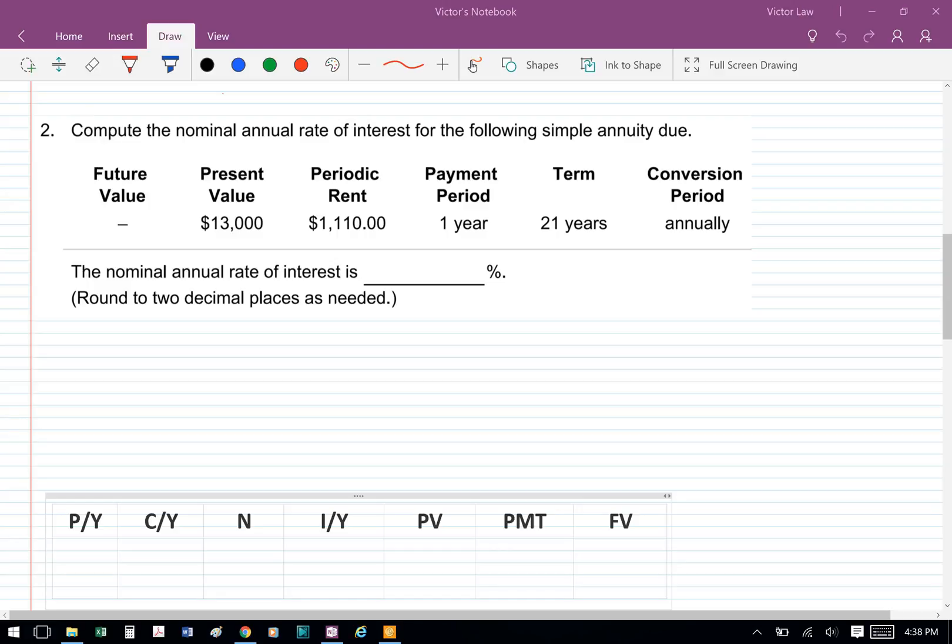Business Math Chapter 13 Preclass Assignment Tutorial Question 2: Compute the Nominal Annual Rate of Interest for the following simple annuity due. In this question, we're solving for Nominal Annual Rate of Interest, so that's I over Y.